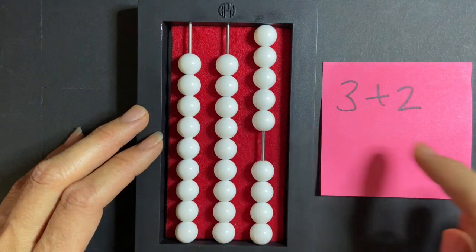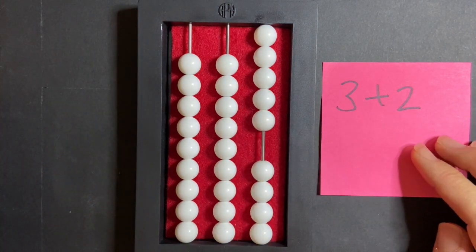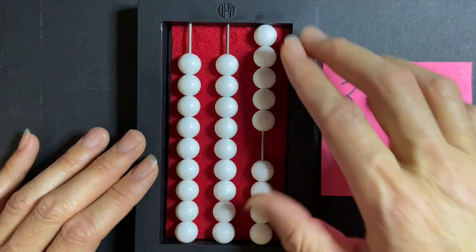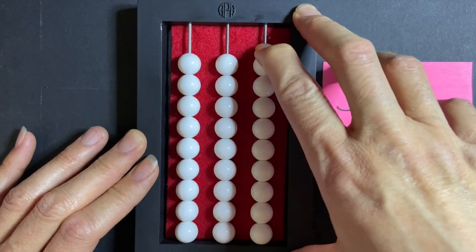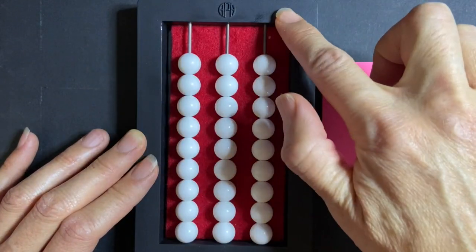That's how I do a simple addition problem with no exchanges on the expanded simple abacus. Now I'm going to clear my abacus by pushing all my beads away from the counting bar, and I'm ready for my next problem.